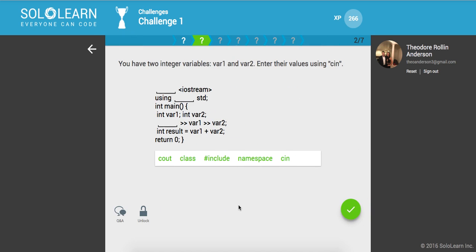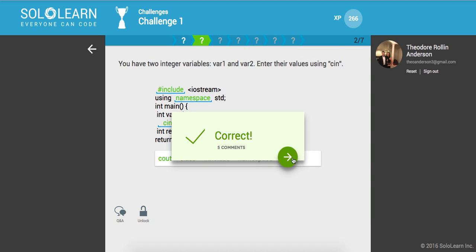You have two integer variables, var1 and var2. Enter their values using console input. So first, let's do our include here, the output stream, so we can have access to the console write and read methods. Then we'll do using the standard namespace. Okay, that's what we want to put in there. We want to take in their values, and that should be it. All right, cool.